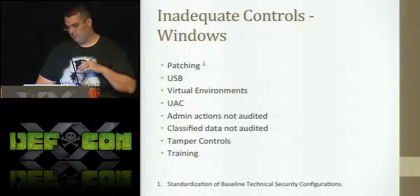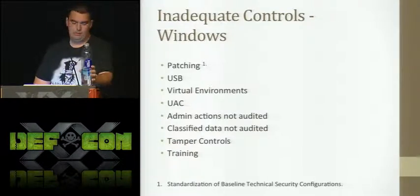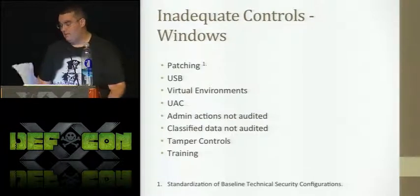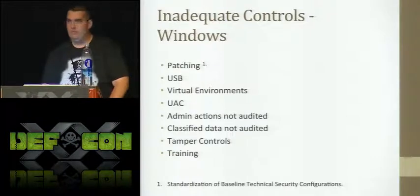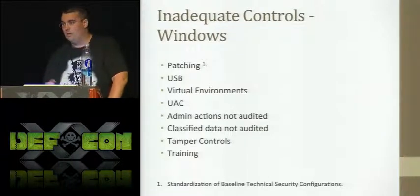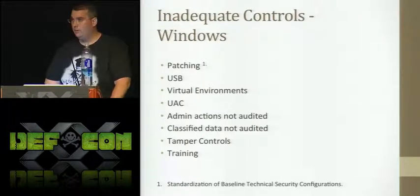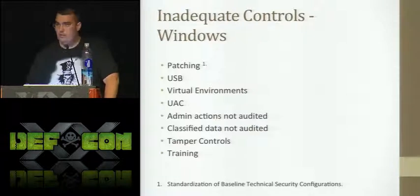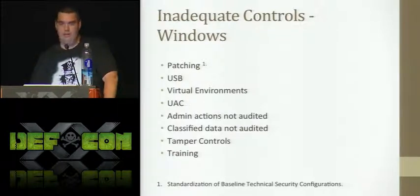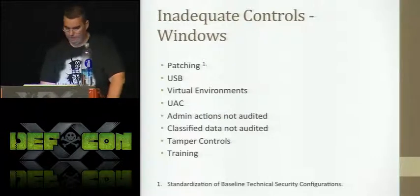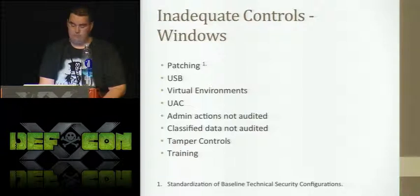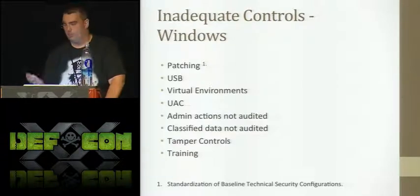Overview of inadequate controls in Windows: patching is very ambiguous — I just have to tell them to expeditiously patch the system. USB drives are how stuff gets taken off the system. Virtual environments — if you're running VMware or any other virtual system, there are no security requirements for it. UAC with Windows 7 and Vista is not addressed at all. Classified data is not audited — I don't care if you click on some folder, I care if you're taking classified data off the system. Training is another issue — we're not required to have these guys sufficiently trained; there should be a firm training requirement for ISSMs.